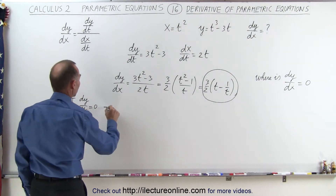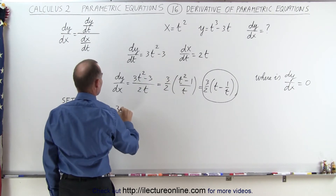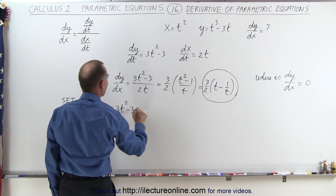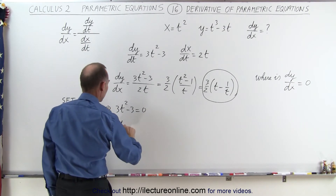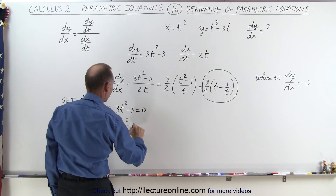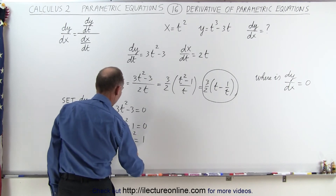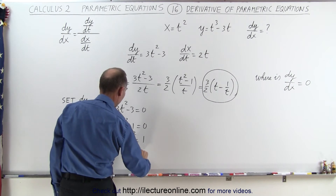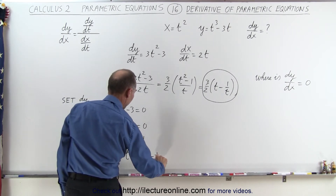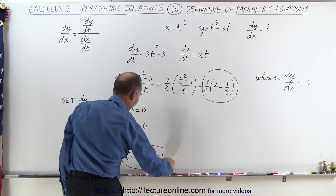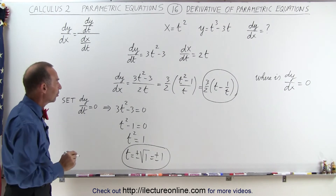When we do that: dy/dt is 3t squared minus 3, so 3t squared minus 3 equals 0. Dividing both sides by 3 gives t squared minus 1 equals 0, or t squared equals positive 1. Therefore, t is equal to plus or minus the square root of 1, which is equal to plus or minus 1. So when t equals 1 and t equals negative 1, the slope will be equal to 0.